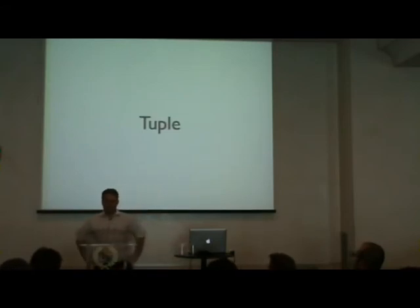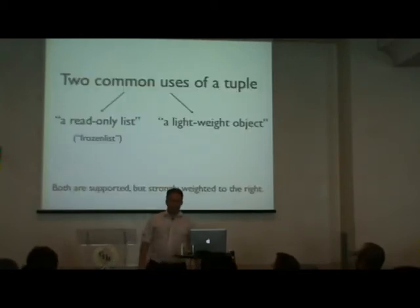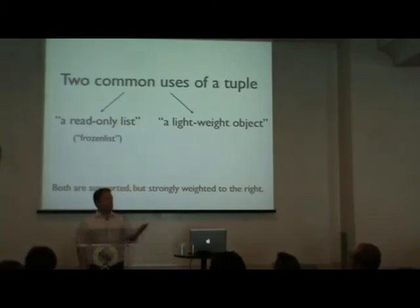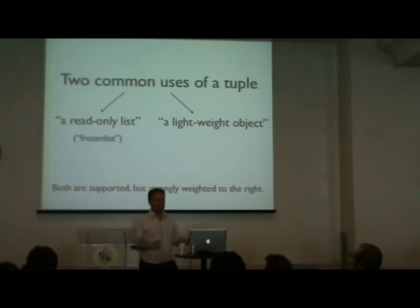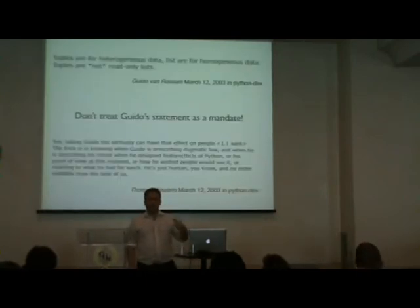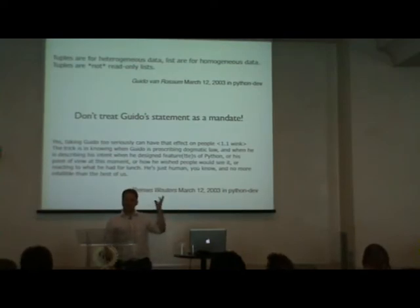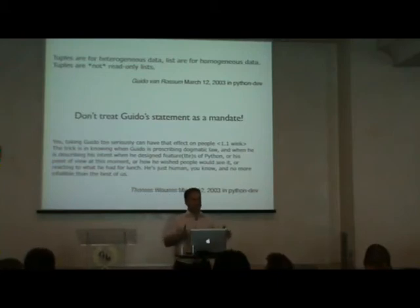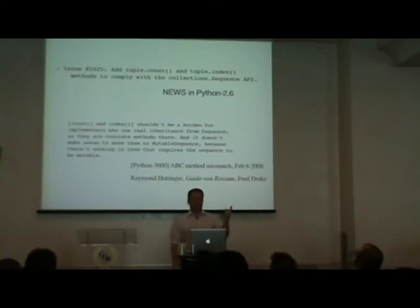Another type is the tuple. People think of tuples in two ways. If you come from C++, you might think of a tuple as a constant list. But most experienced Python programmers say no — it's more like a lightweight object. Guido specifically said since around 2003 that tuples are not immutable lists. In Python 2.6, tuple gained count() and index() to be consistent with every other sequence type, finally added after 18 years.